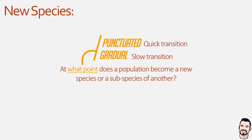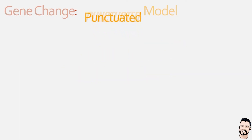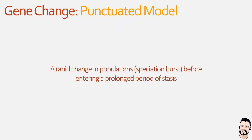We'll take a look at these in more detail starting with the punctuated model. This was first proposed in the 1970s and suggests that species remain in periods of stasis where they are very stable and resist change. Then at some point this stability is punctuated by a short and rapid burst of significant evolutionary change resulting in a new species.